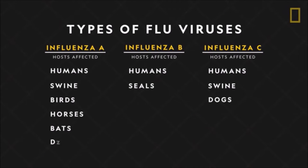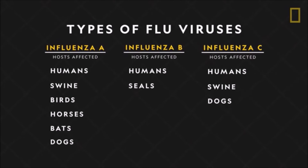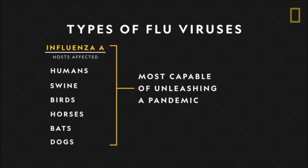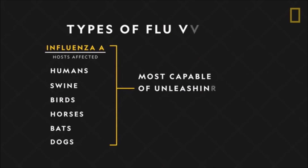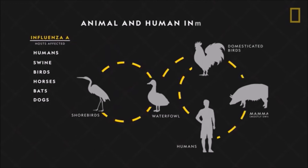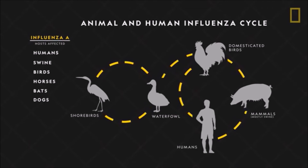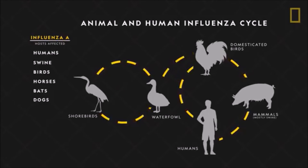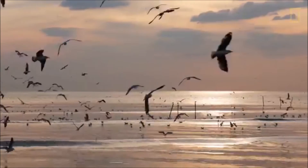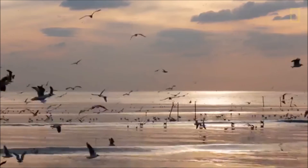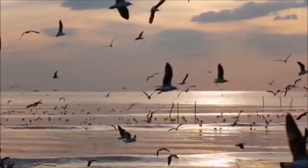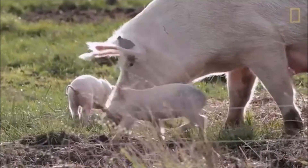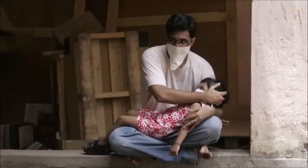Influenza viruses are categorized as types A, B, or C, with type A strains being the most capable of unleashing a pandemic. Influenza A viruses mutate more rapidly, allowing them to adapt to new hosts and even cross species. Avian flu and swine flu, for instance, are two strains of type A viruses that, through mutations, can be transmitted from birds and pigs to humans.